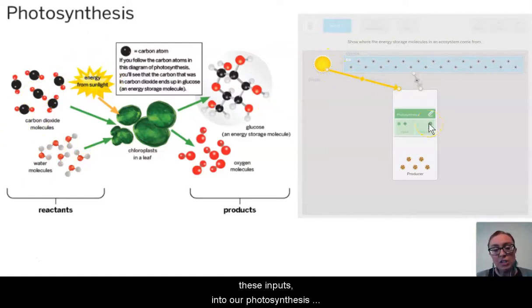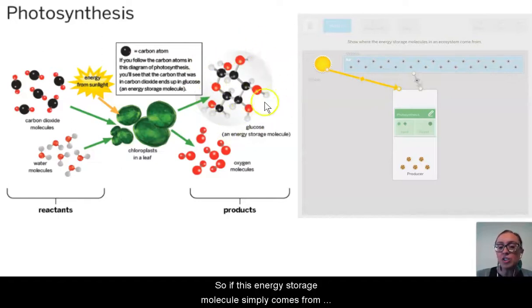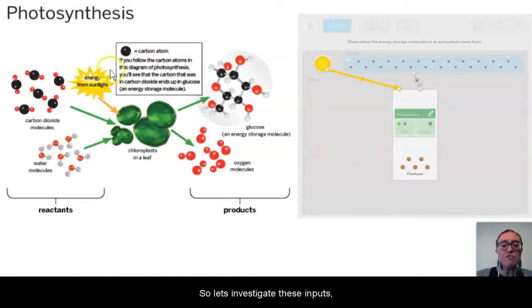I know from a previous unit on chemical reactions that I don't make new stuff or get rid of stuff during a reaction—I simply rearrange what's there. So if this energy storage molecule comes from rearrangement and I don't have enough of them, that means I didn't have enough stuff to rearrange to make it. Let's investigate these inputs, these reactants of photosynthesis, a little further.